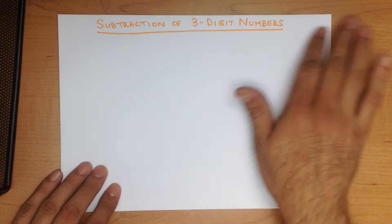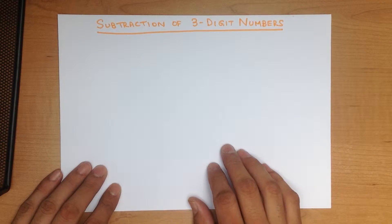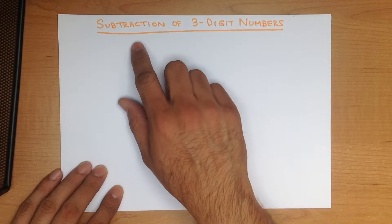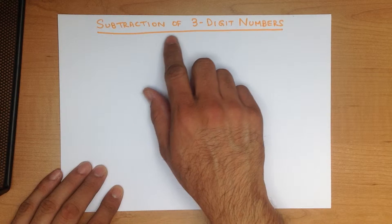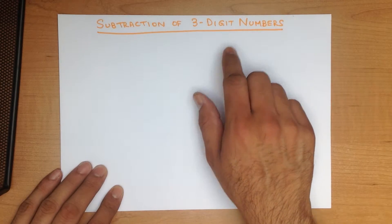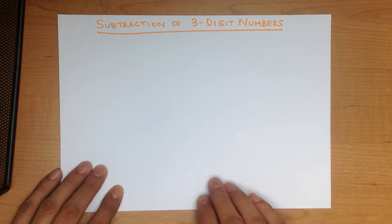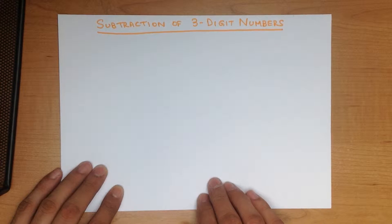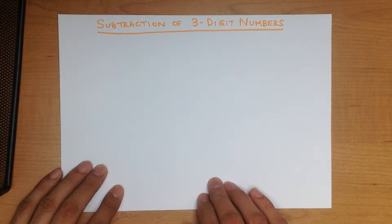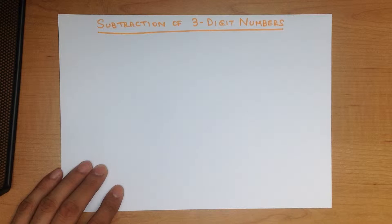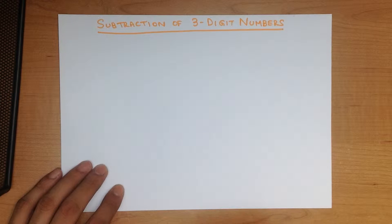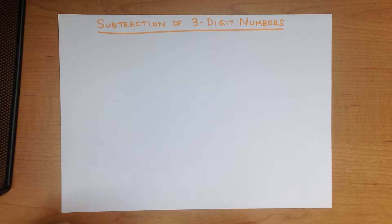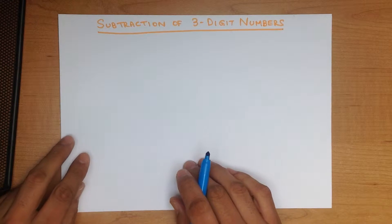In this tutorial we are going to go through subtraction of three-digit numbers. We are going to use the vertical format to do this. So let's start with a nice easy example.